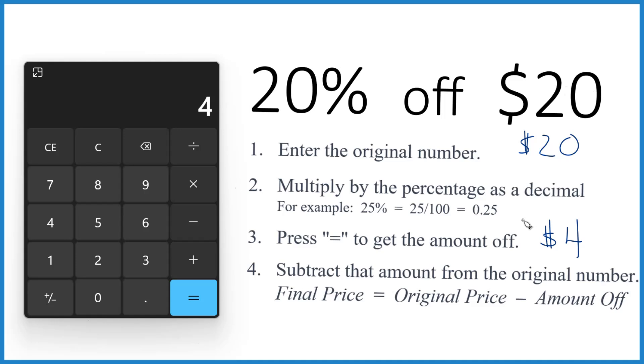If you want to know the final price, how much you actually pay for the item, you take the original, that's the $20, minus how much you got off, that's the $4. So 20 minus four, that equals $16 there. So you'd be paying $16 for whatever item you got 20% off on.